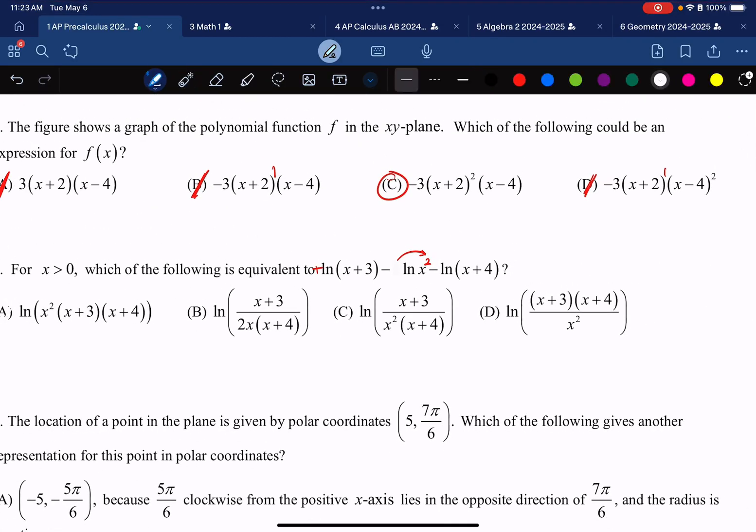So I can eliminate option A. Option A has an x squared in the numerator. B does not have an x squared in the denominator. Both options C and D have an x squared in the denominator.